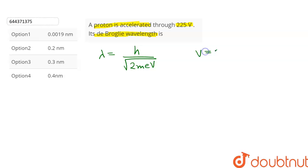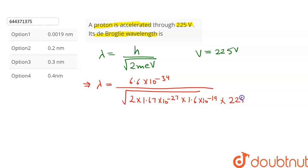It is given that V is equal to 225 volts. So let's substitute the values in this equation. This will give us lambda is equal to 6.6 × 10^-34 upon square root of 2 × 1.67 × 10^-27 × 1.6 × 10^-19 × 225.